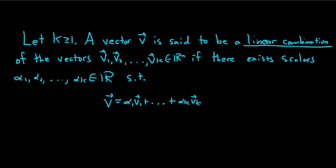So if you can write it this way, we say v is a linear combination of these other vectors, v sub 1 through v sub k. That's what it means for v to be a linear combination of these other vectors.